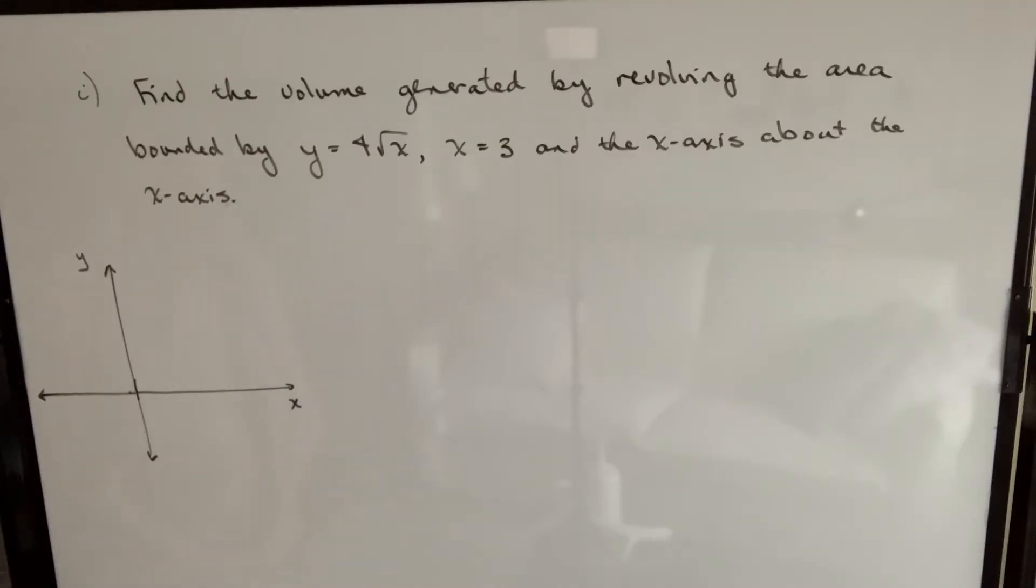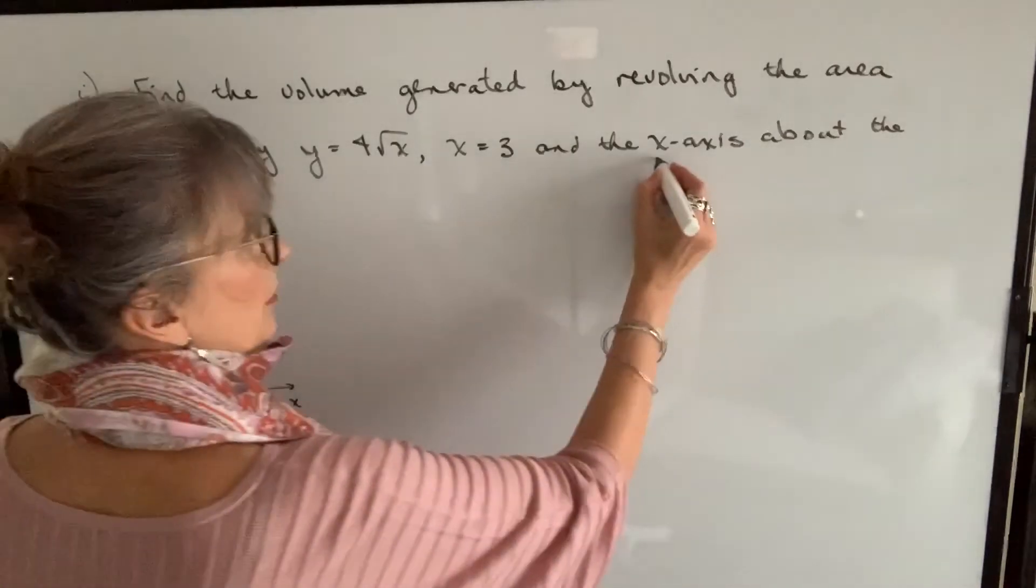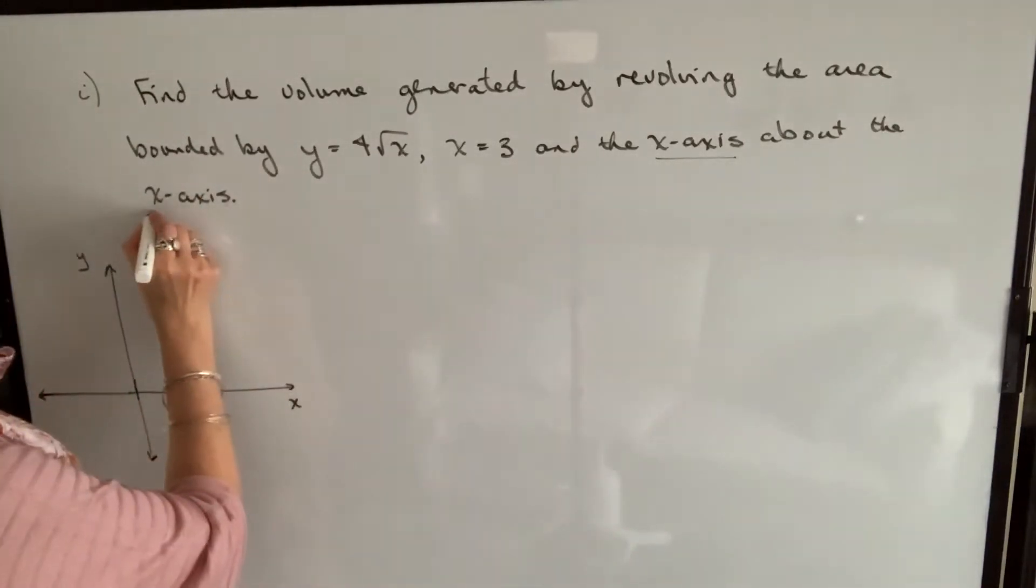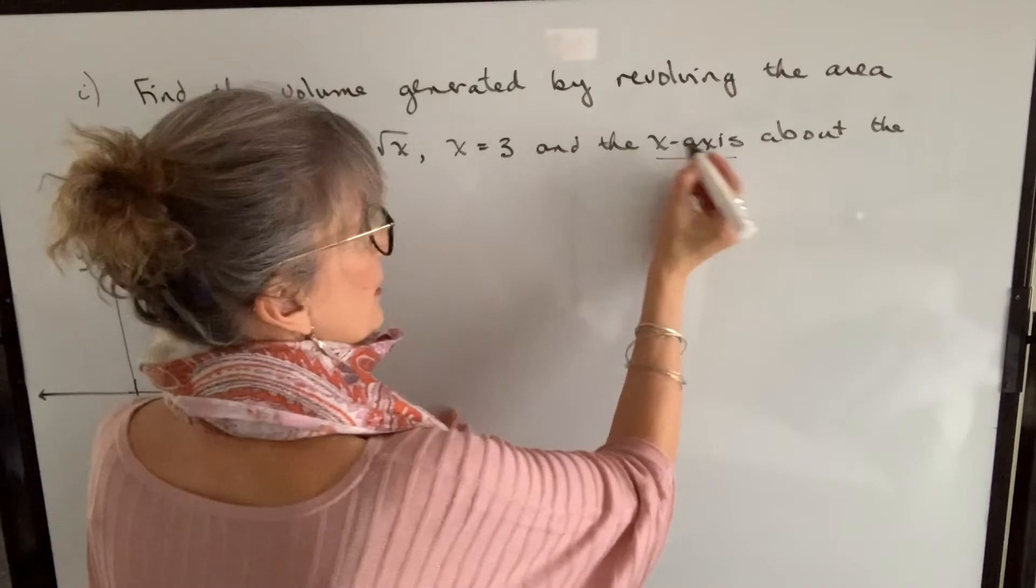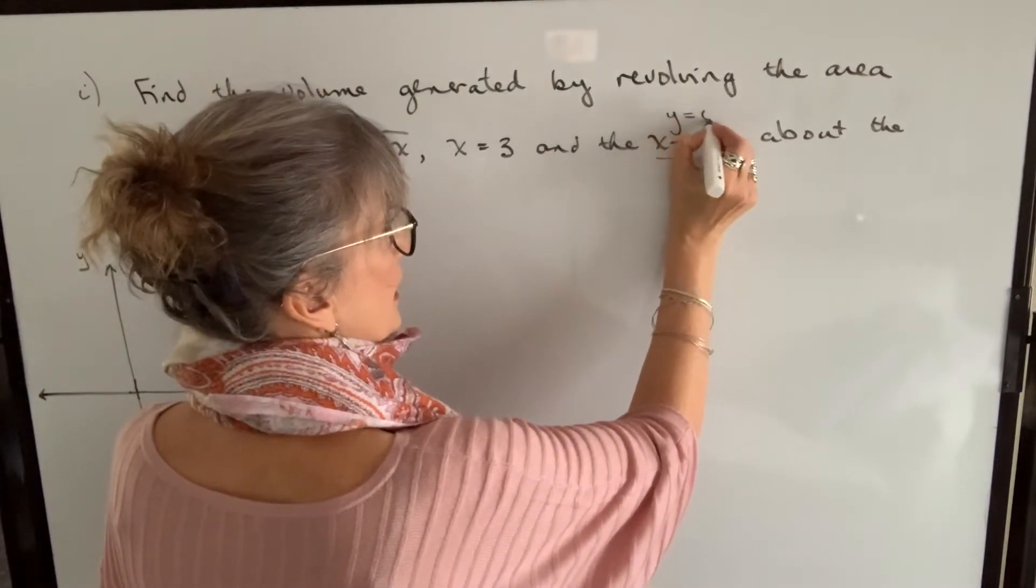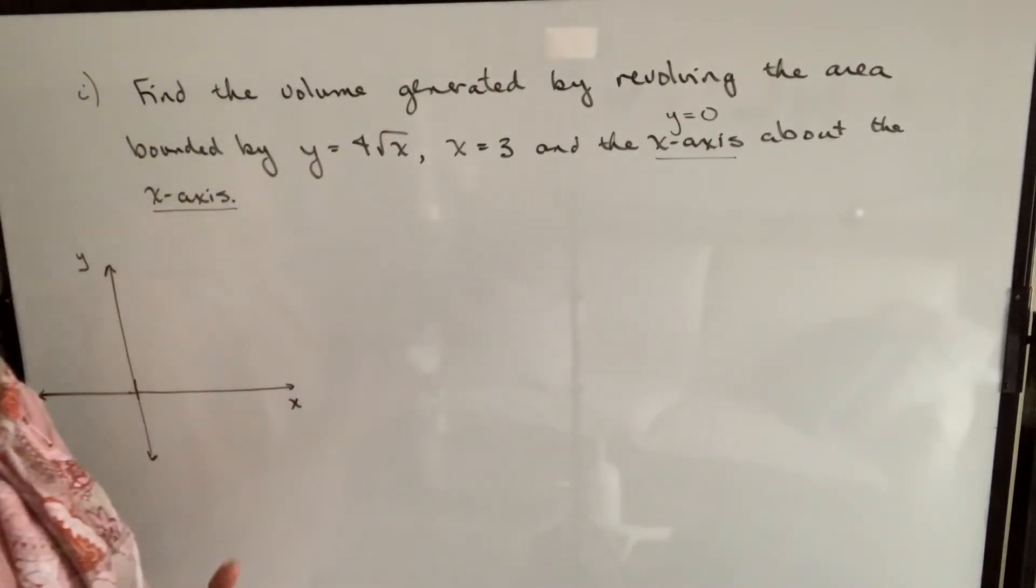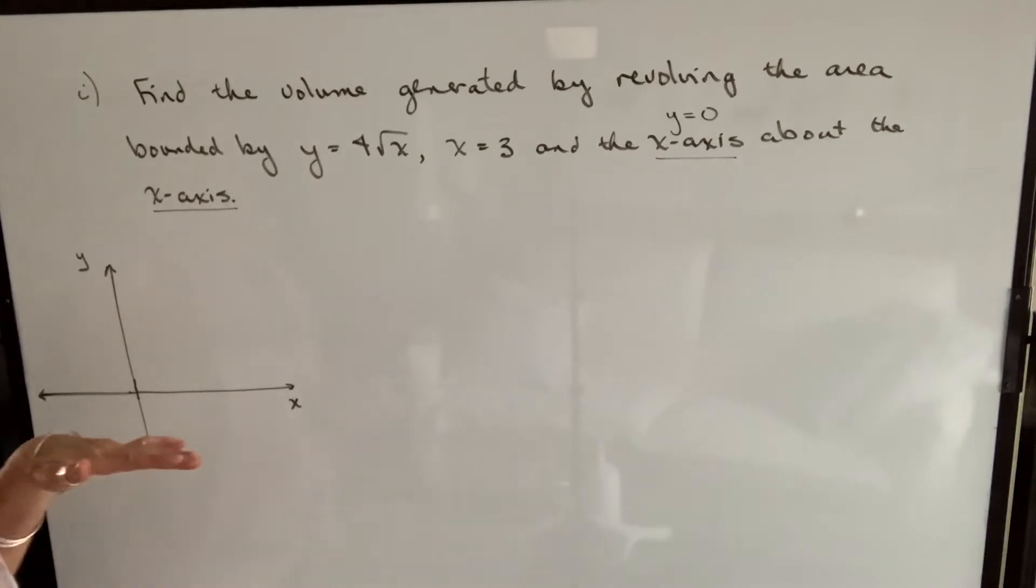Let's take a look at a couple of examples. Our first example says, find the volume generated by revolving the area bounded by y equals 4 times square root of x, x equals 3, and the x-axis about the x-axis. So we know that this is going to be a disc, because it's bounded by the x-axis, and it's rotating around the x-axis. They might say y equals 0 instead of writing the x-axis, referring to the same line.